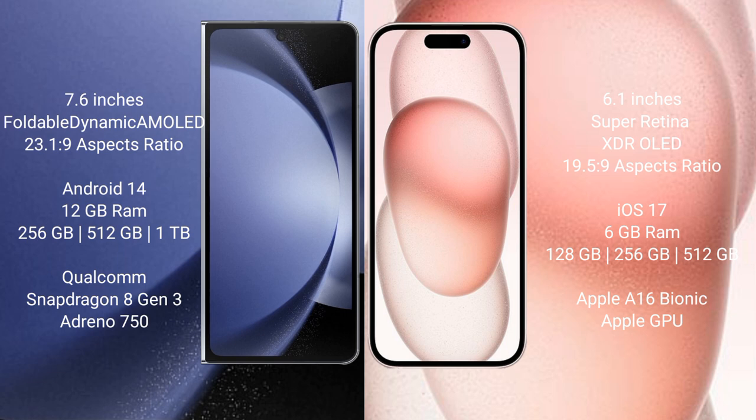iPhone 15 comes with 6GB RAM and 128GB or 256GB or 512GB internal storage. It is powered by the Apple A16 Bionic processor with Apple GPU graphics.